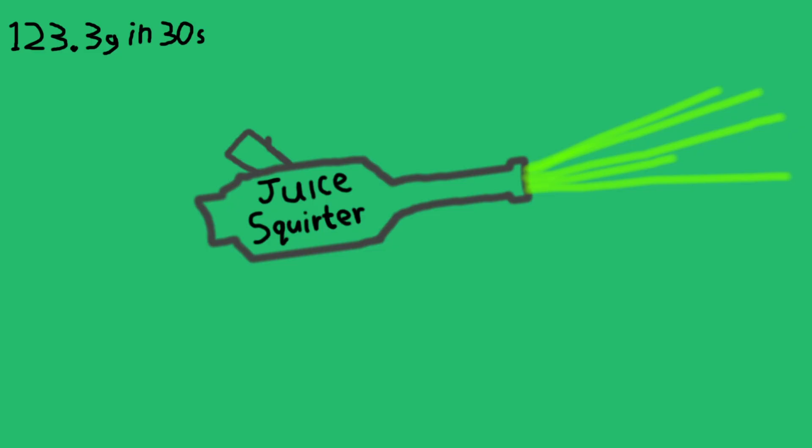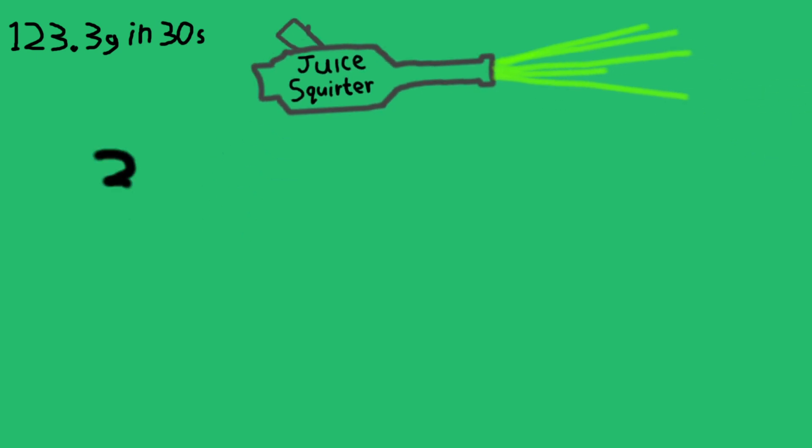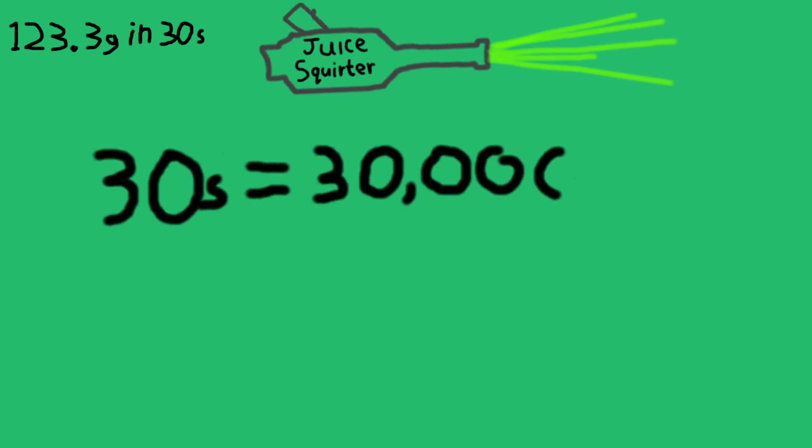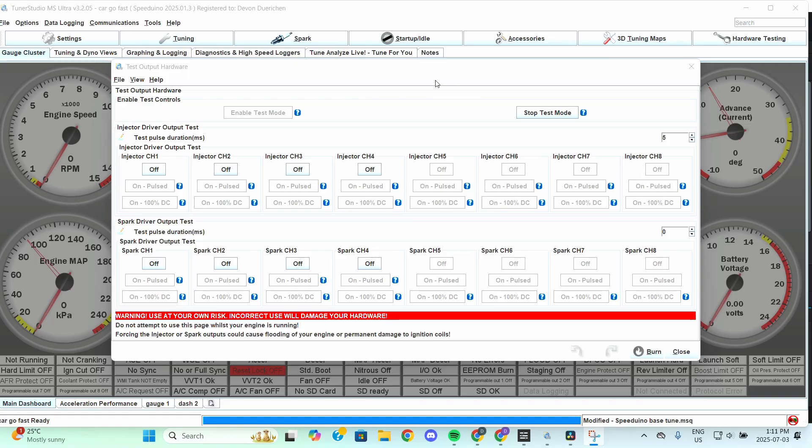The next thing that needs to happen, and this is key to keeping the math simple, is the injector needs to be turned on for the same amount of milliseconds. But those milliseconds need to be broken up into many, many pulses. We know that 30 seconds is 30,000 milliseconds, so the total pulses will have to add up to exactly 30,000 milliseconds.